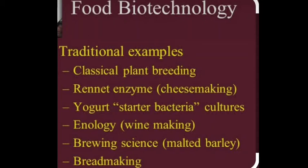Then there is enology — wine making — where juice from different fruits, like grapes, is fermented with the help of yeast or fungus and converted into wine. Then brewing sciences, where malt and barley are fermented to produce different drinks. And bread making, where yeast is used to make the bread spongy and a little richer in protein. Like this, microorganisms are used for food production using biotechnology so we can produce it in large quantities.